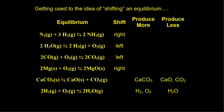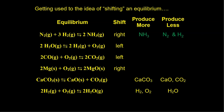Getting used to the idea of shifting in equilibrium: if a stress causes the nitrogen-plus-hydrogen-to-ammonia reaction to shift to the right, it will produce more ammonia and less of the reactants nitrogen and hydrogen. Shifting to the right means making more products and using up some reactants. If a stress causes a shift to the left, it produces more things on the left side of the arrow and less on the right — so shift left increases reactants and decreases products.